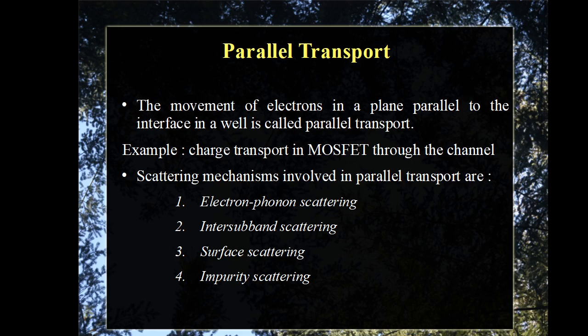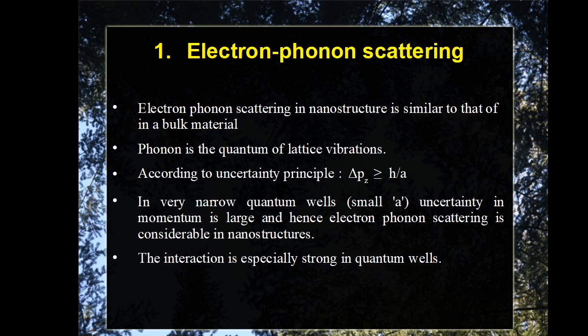During parallel transport, there will be different collisions between charge carriers — this is called scattering. There are mainly four types of scattering mechanisms involved in parallel transport: electron-phonon scattering, inter-subband scattering, surface scattering, and impurity scattering.